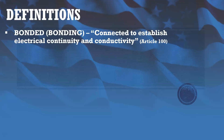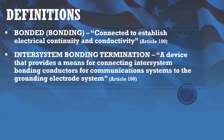For definitions, bonded or bonding means connected to establish electrical continuity and conductivity. This is a perfect example of why the term bonded gets replaced with grounded quite a lot. You'll often hear that you need to ground a metallic enclosure or ground a raceway, when in reality what you're doing is bonding that enclosure or raceway to the grounding system.